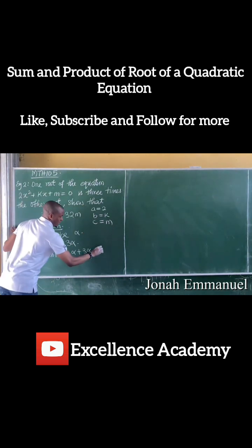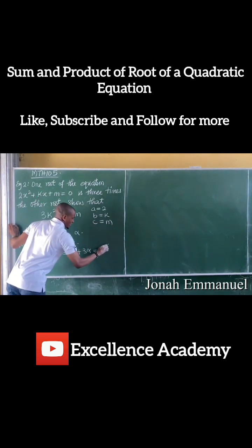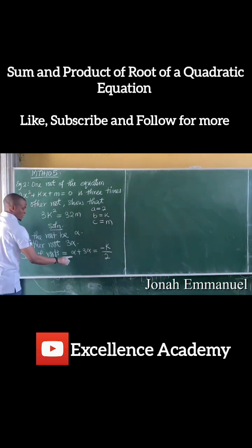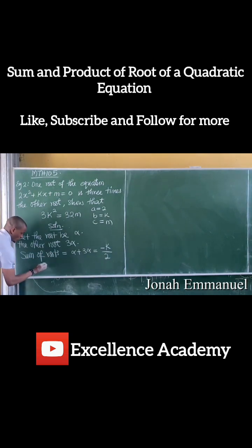So if I have this now equal to minus B, that's K over A, which is two. So alpha plus three alpha gives four alpha. So four alpha is equal to minus K over two.